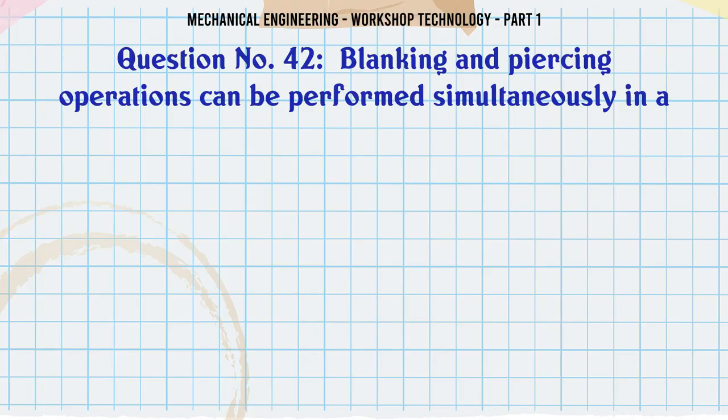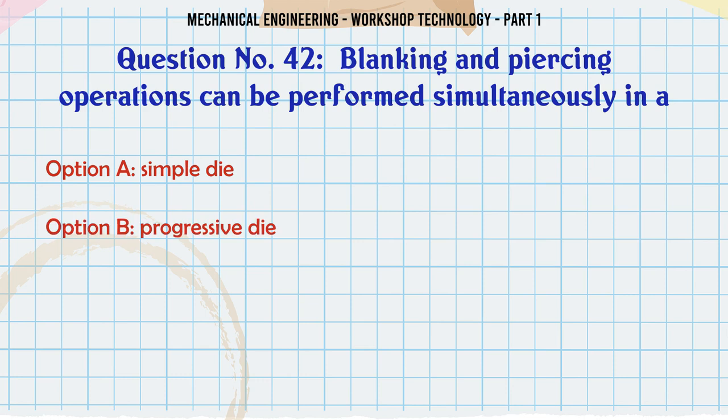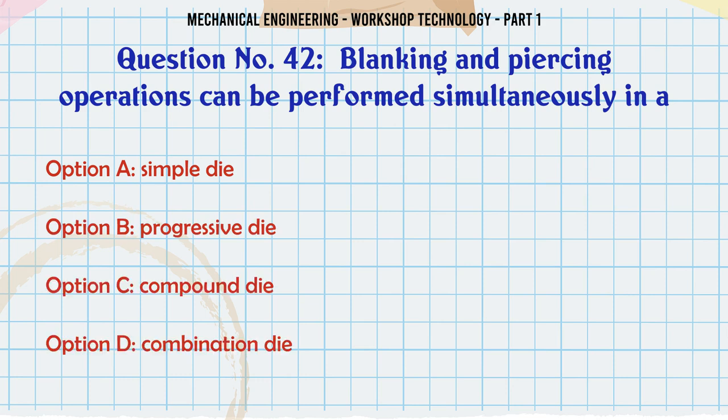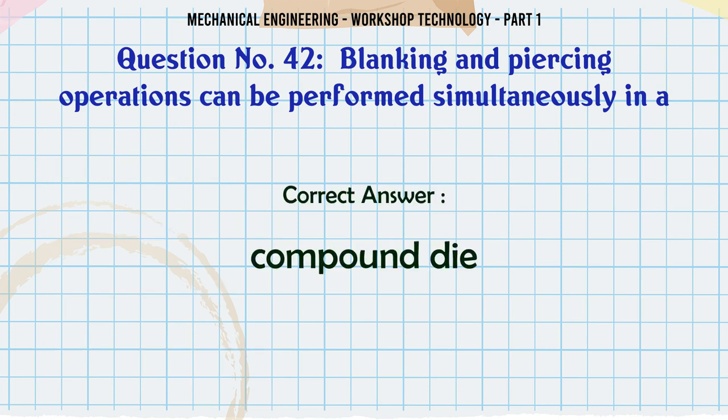Blanking and piercing operations can be performed simultaneously in: A. Simple die. B. Progressive die. C. Compound die. D. Combination die. The correct answer is: Compound die.